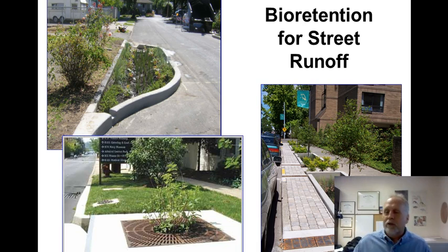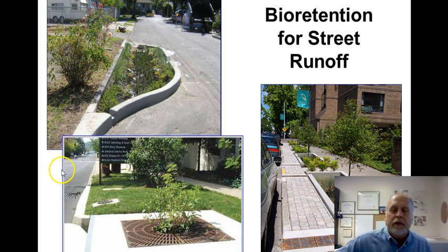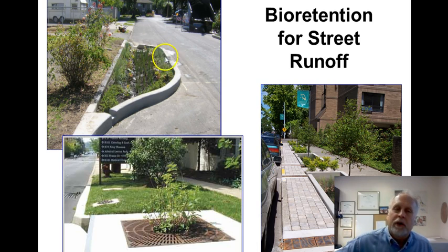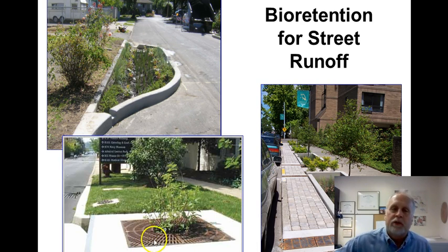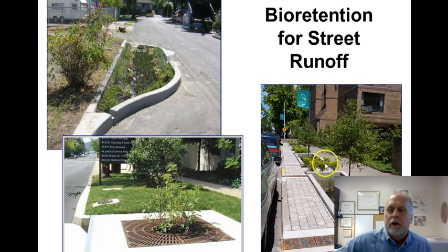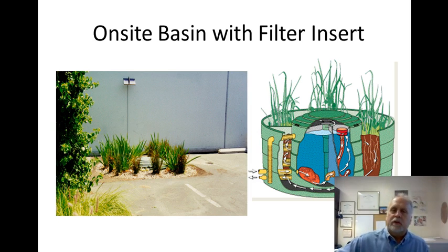Here's bioretention for street runoff. This can be done on different scales — instead of just draining the water off, you plant it. You're removing some water from the system through evapotranspiration and infiltrating some, so you're not just running it all to the storm sewer. You can create attractive little planted islands in the street. That's a technology that looks nice.